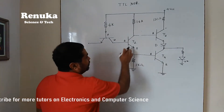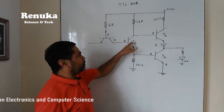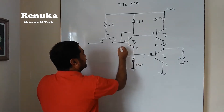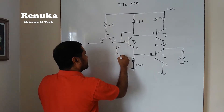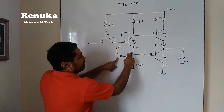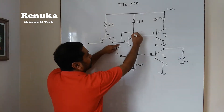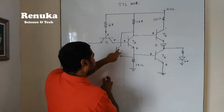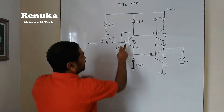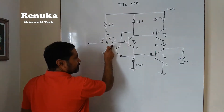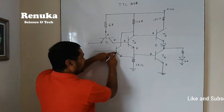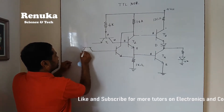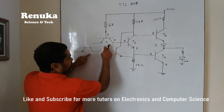We have to connect a transistor in parallel to transistor T2. The collector of this transistor is taken, its emitter is again taken, and we connect a transistor such that the emitter of the connected transistor should be connected to the emitter, and the collector of this transistor should be connected to the collector of transistor T2. This creates a parallel connection. Collector to base, again collector to base — so there is another connection.